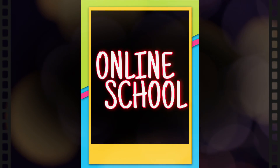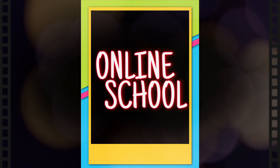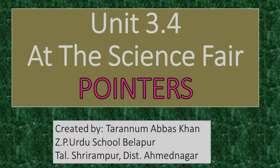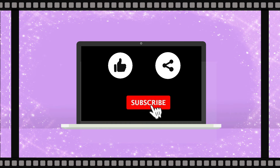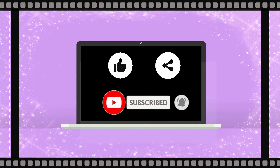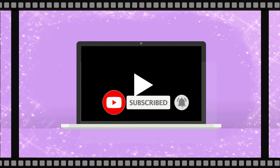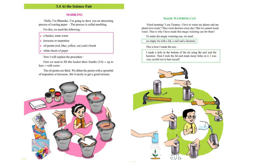Welcome back to our channel, Online School. Today we will learn a lesson from my English book, 6th grade, Unit 3.4: At the Science Fair. If you like our video, please like, share, and subscribe to our channel and press the bell icon for more related videos. This unit has two projects: marbling and magic watering can. We will solve the questions and answers for both projects in this video.